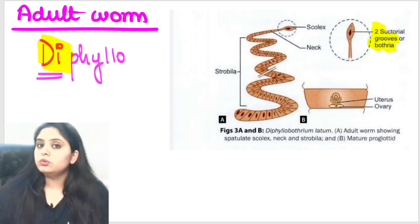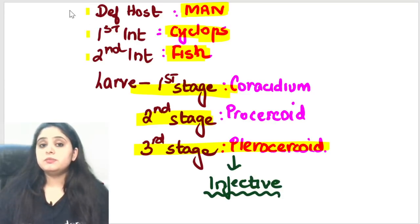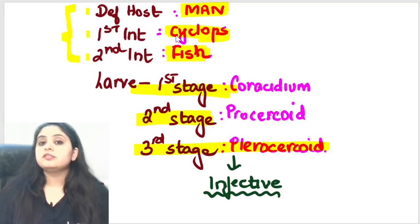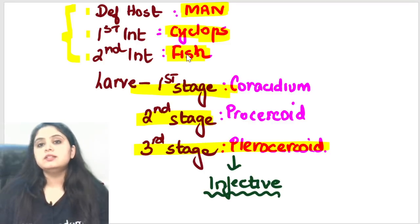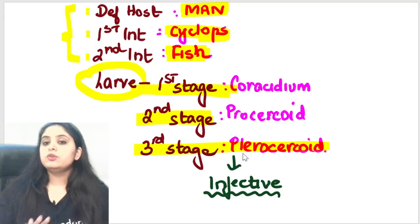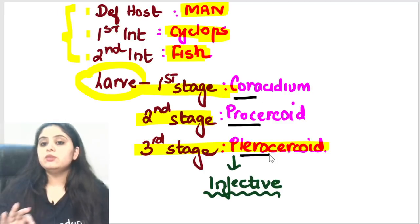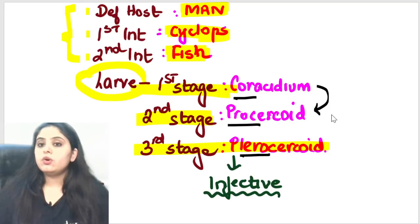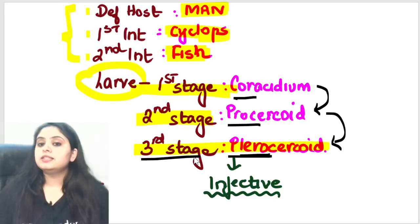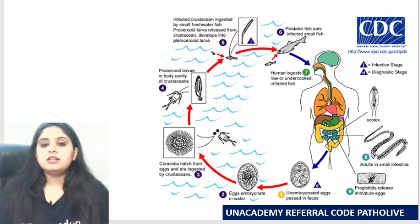Let me begin with the life cycle. The hosts are: definitive host is man, first intermediate host is Cyclops, and second intermediate host is fish — sometimes a small fish eaten by a big fish. The larval stages in cestodes are coracidium, prosercoid, and plerosercoid. The plerosercoid is the third-stage larva and is the infective stage for humans.